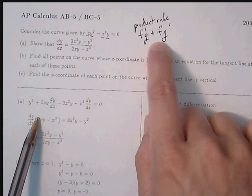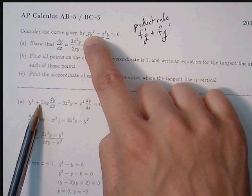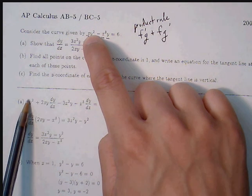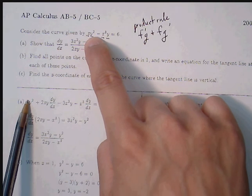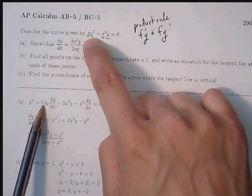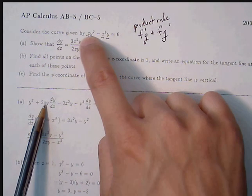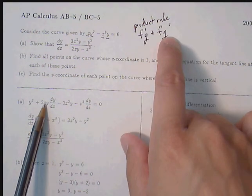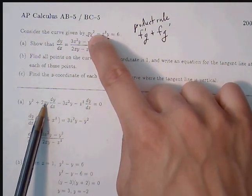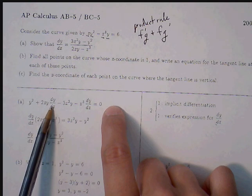Going through product rule: f′ times g gives us y². Then f times g′: we keep x, and the derivative of y² is 2y. But since it involves y, we attach dy/dx. So that term becomes x times 2y dy/dx.